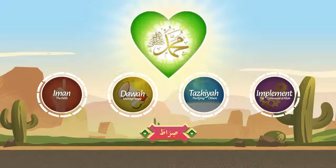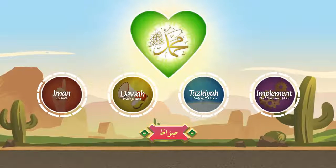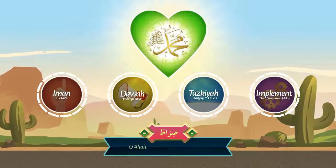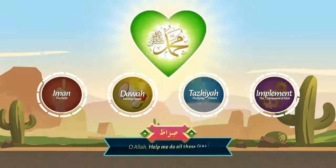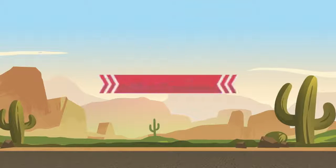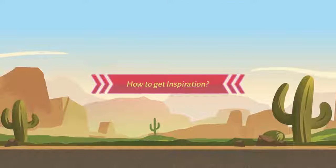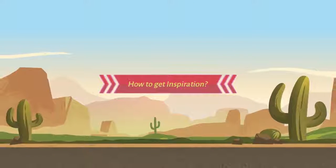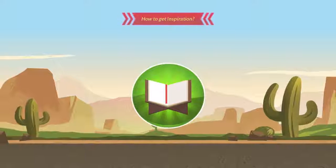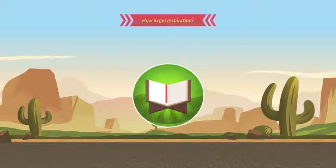When we say sirat al-lazeena an'amta alayhim, in other words, we are asking Allah every day: O Allah, help me do all these four. In addition to asking Allah using this dua, read the Quran in which a number of models are described.